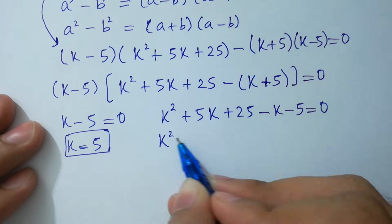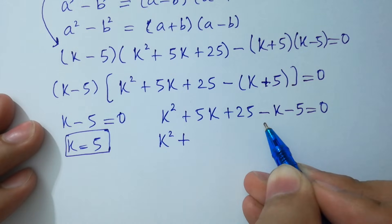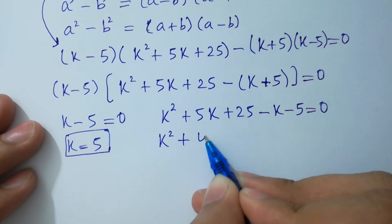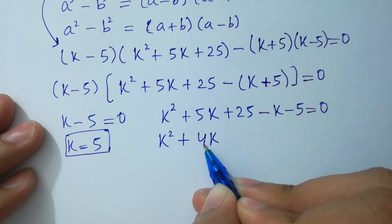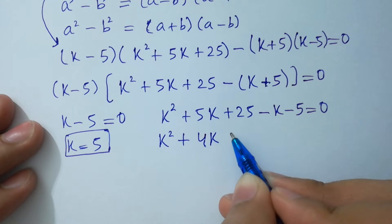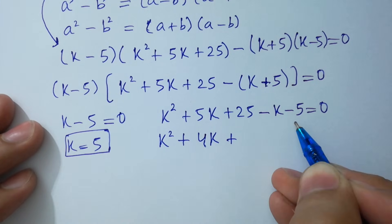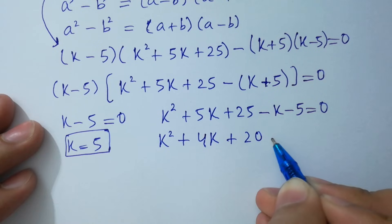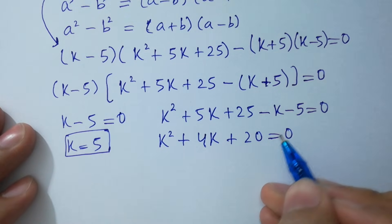Now we solve the remaining quadratic. Combining like terms: k squared plus 5k minus k gives 4k, and 25 minus 5 gives 20. So the quadratic equation is k squared plus 4k plus 20 equals 0.